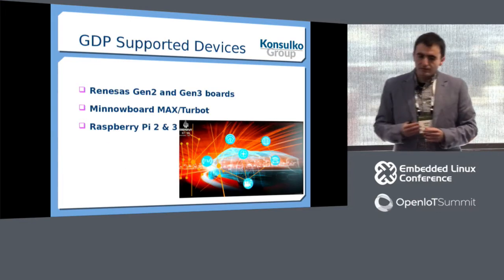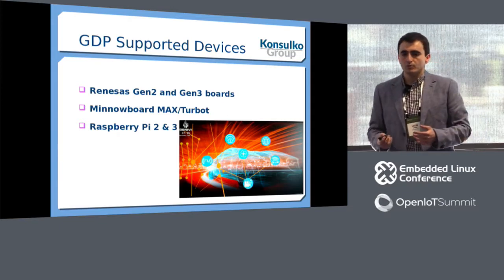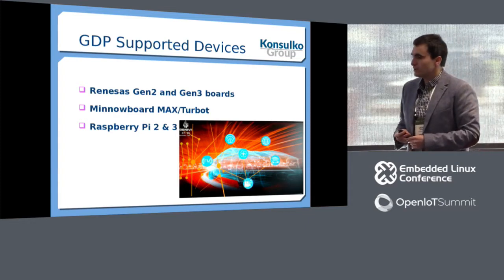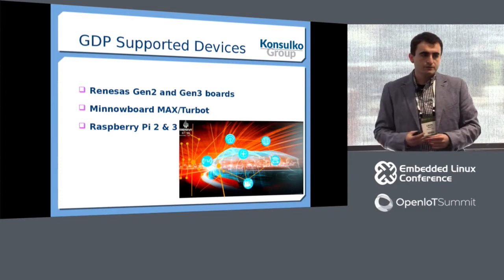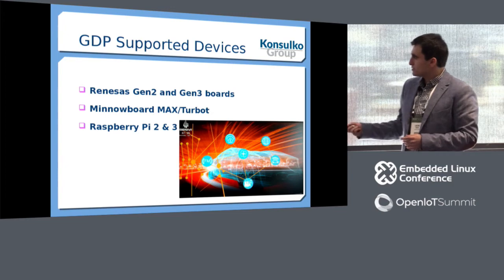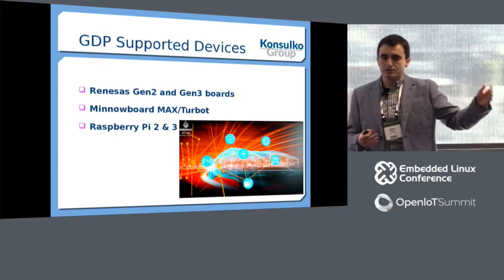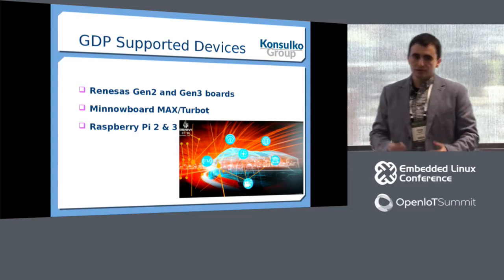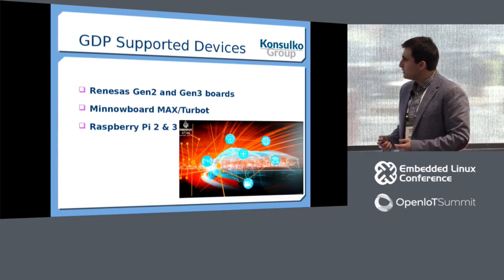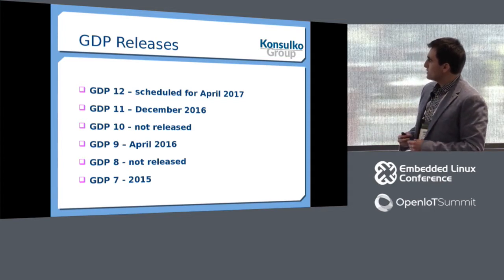The list of supported devices for Genevi Development Platform is Renesas Generation 2 and 3 boards, devices with Intel CPUs like the open source hardware boards MinnowBoard Max and Turbo, as well as Raspberry Pi 2 and 3. Even if you don't have these devices, you can still run it using QEMU — so even without the hardware you can look at the platform, build it, and play with it. The next GDP release is scheduled for April 2017. The current release, Genevi Development Platform 11, was released in December.